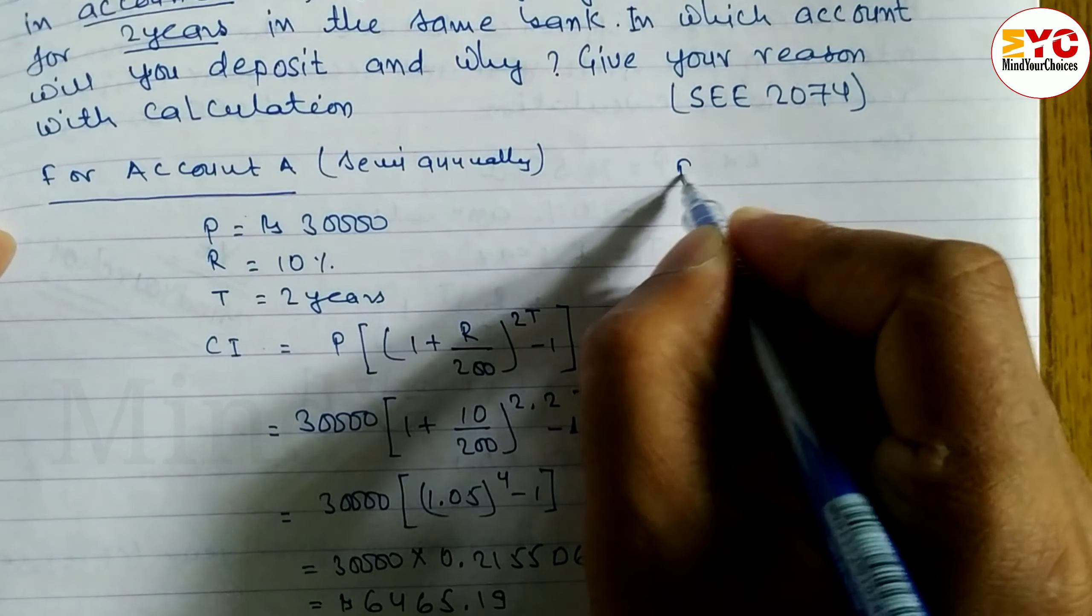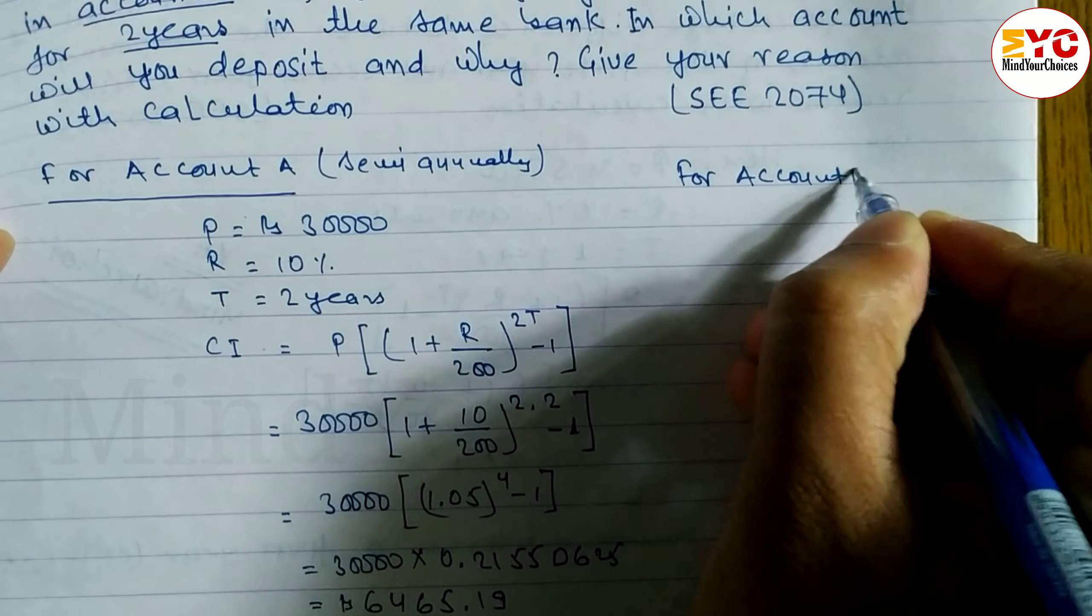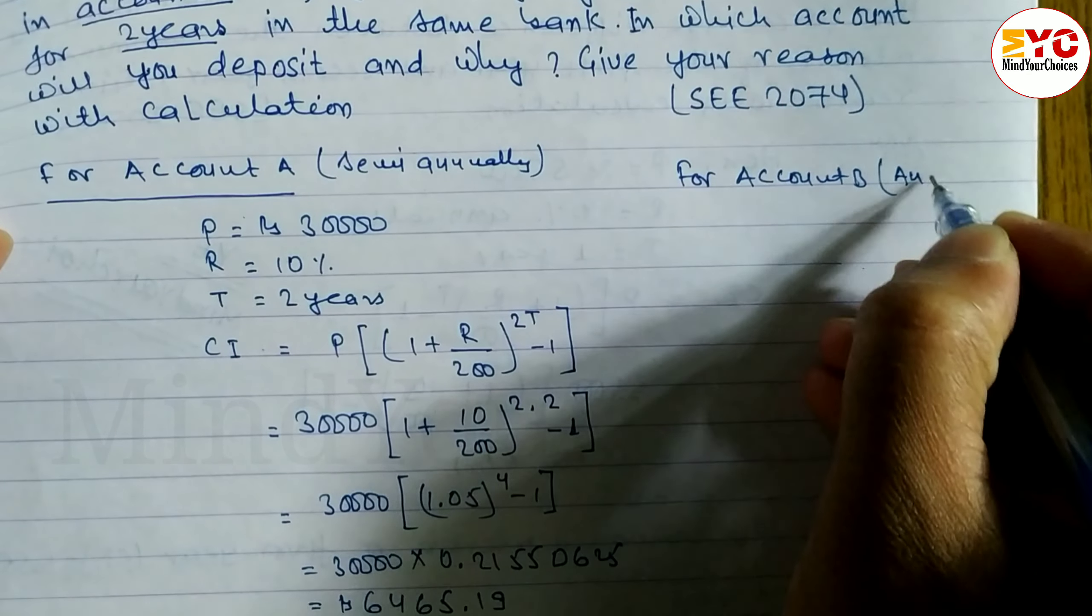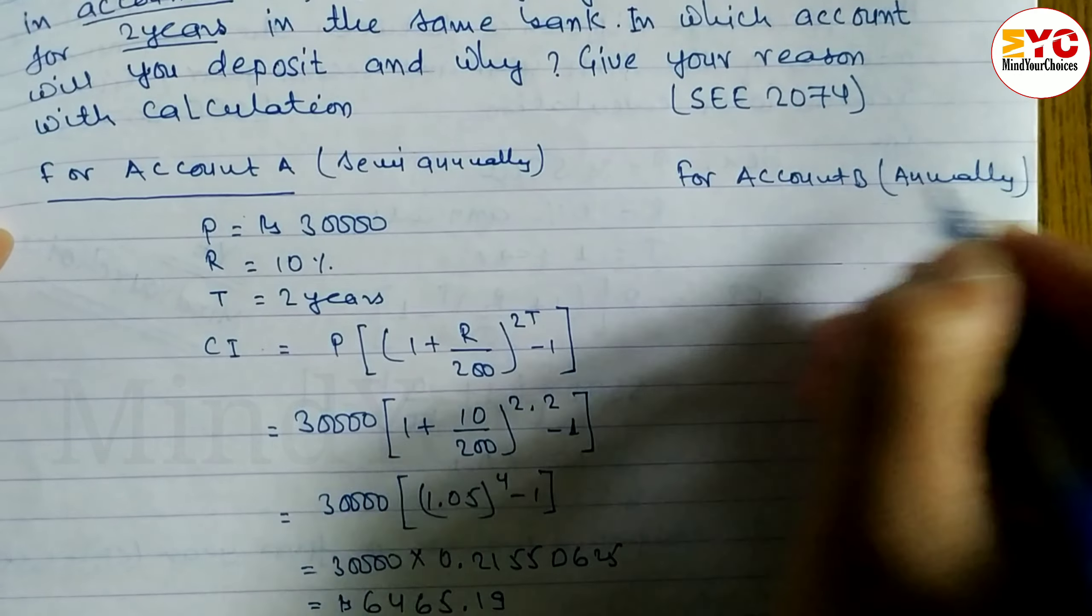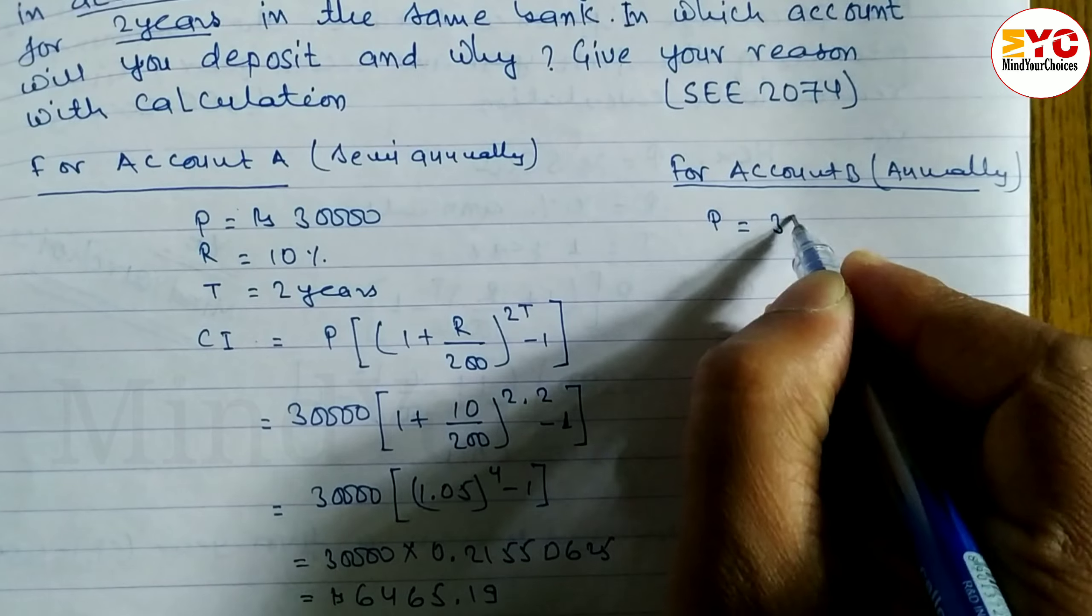Now for account B, we have to find out for account B. This one is annually. This was semi-annually, this is annually. Principle is equal to same principle, 30,000.